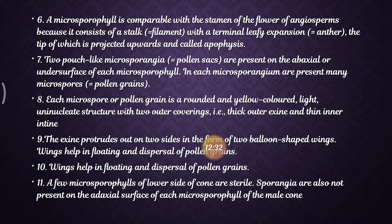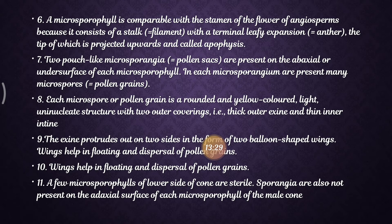Pollen grains are released when the microsporangium is fully developed. Each microspore or pollen grain is a yellow-colored, light, uninucleate structure with two outer coverings: a thick outer exine and an inner intine. The exine protrudes out on two sides in the form of two balloon-shaped wings, which help in the floating and dispersal of the pollen grains.